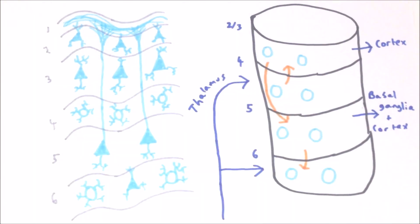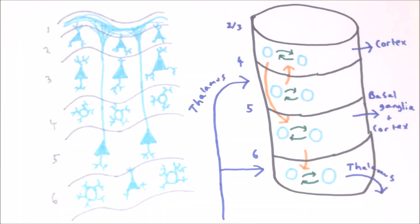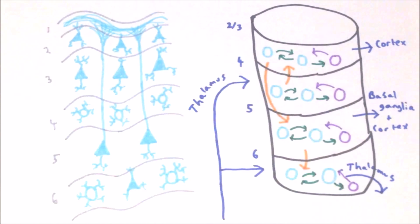Layer five then projects to layer six, as well as projecting to the basal ganglia and other cortical areas. Finally, layer six projects back to the same area of the thalamus, creating a feedback loop. Within each layer, the neurons also make contact with each other and with inhibitory interneurons.